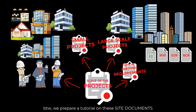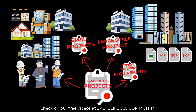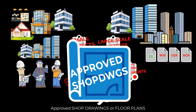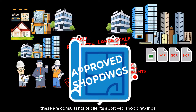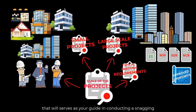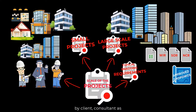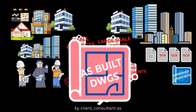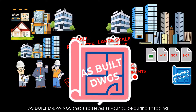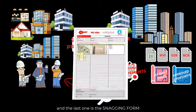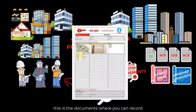By the way, we prepared a tutorial on the site documents. Check our free videos at SketchLife365 Community. Number 2: Drawings or Floor Plans. These are consultant or client-approved shop drawings that will serve as your guide in conducting snagging. For the Property Inspector, drawings should be approved by the client-consultant as built drawings that also serve as your guide during snagging. And the last one is the snagging form — this is the document where you can record all your findings, comments, and instructions during snagging.